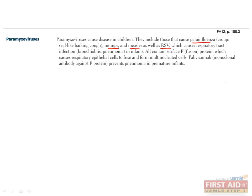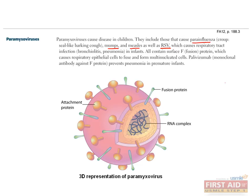RSV, or respiratory syncytial virus, causes an acute viral infection of the lower respiratory tract — bronchiolitis — in young children. It infects almost all infants by the age of 2, with symptoms resembling those of the common cold. Paramyxovirus contains several structural proteins; you should remember the F or fusion glycoprotein, which causes fusion between the viral envelope and the respiratory epithelial cell membrane, mediating viral entry. Palivizumab is a monoclonal antibody against the F protein, used for prevention against RSV in children.